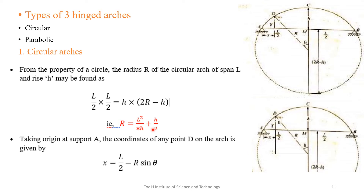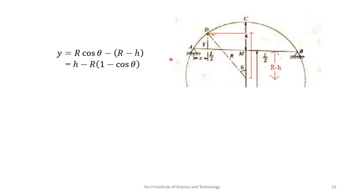Taking the origin at support A, the coordinates of any point D on the circular arch at a horizontal distance x from A and height y are derived using the circle geometry. The angle θ gives: x = L/2 − R sinθ, and y = H − R(1 − cosθ), where sinθ = opposite/hypotenuse and cosθ = adjacent/hypotenuse from the center of the circle.